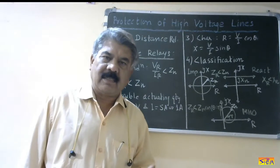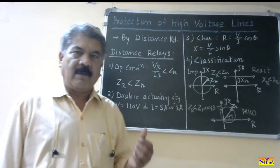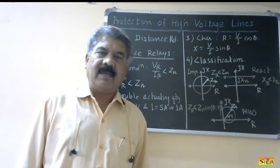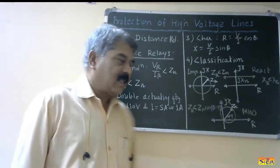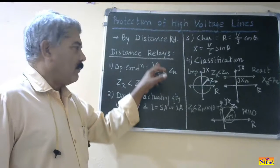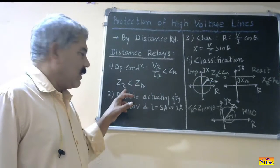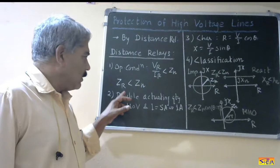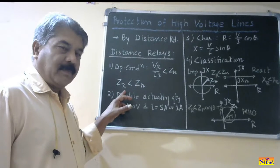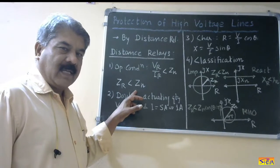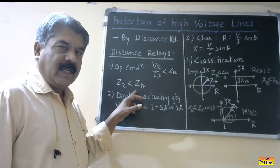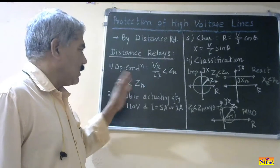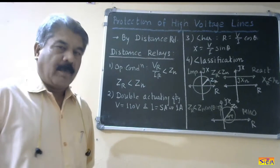This impedance is nothing but the measure of distance of the fault from the relay location. Therefore, the generic name is distance relays. Vr upon Ir we can write in terms of impedance, so that is Zr — the impedance measured by the relay. If it is less than the impedance setting of the relay Zn, then the relay operates. So this is the operating condition.